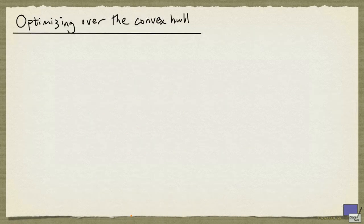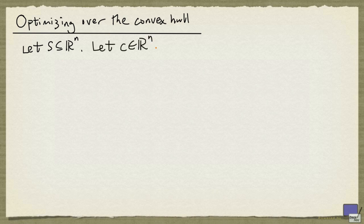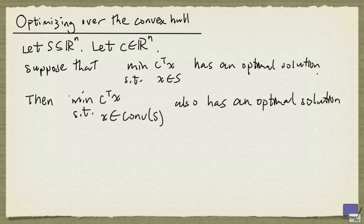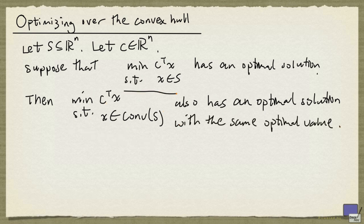The second thing that we are going to look at is the following: let S be a subset of Rn, this time S is not necessarily convex. Let c be an element of Rn. Suppose that the optimization problem minimizing c transpose x subject to x being an element of S has an optimal solution. Then the optimization problem minimizing c transpose x subject to x being an element of the convex hull of S also has an optimal solution, and the optimal value of this problem is precisely the optimal value of that problem. The proof is not difficult and the details are left as an exercise.